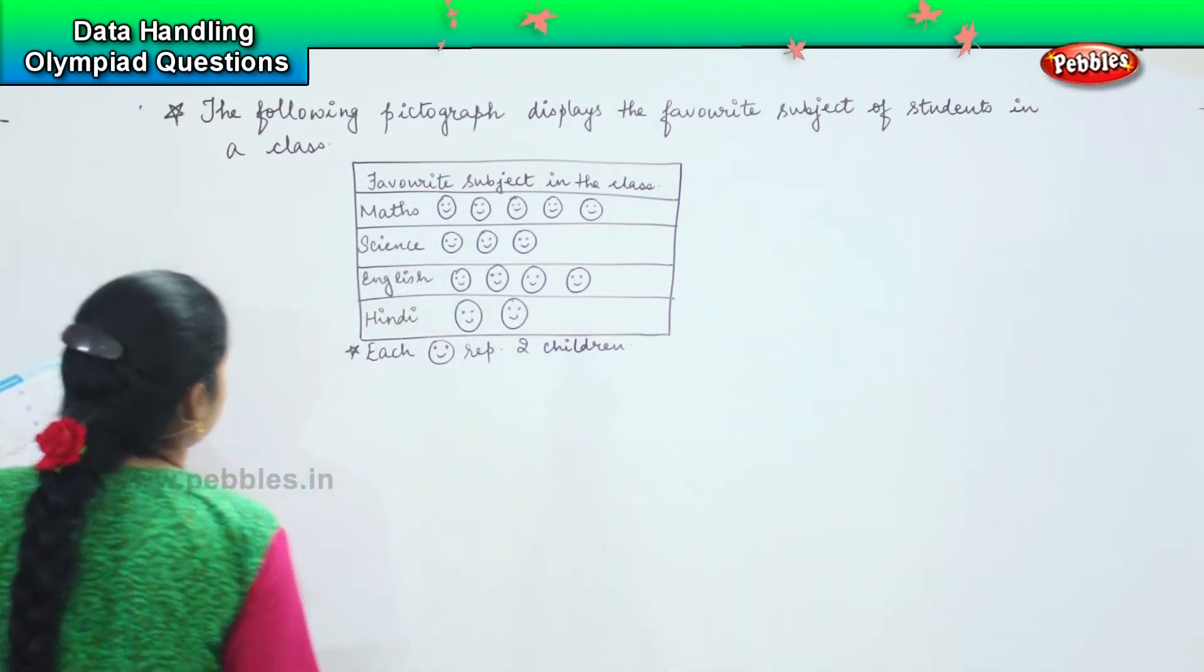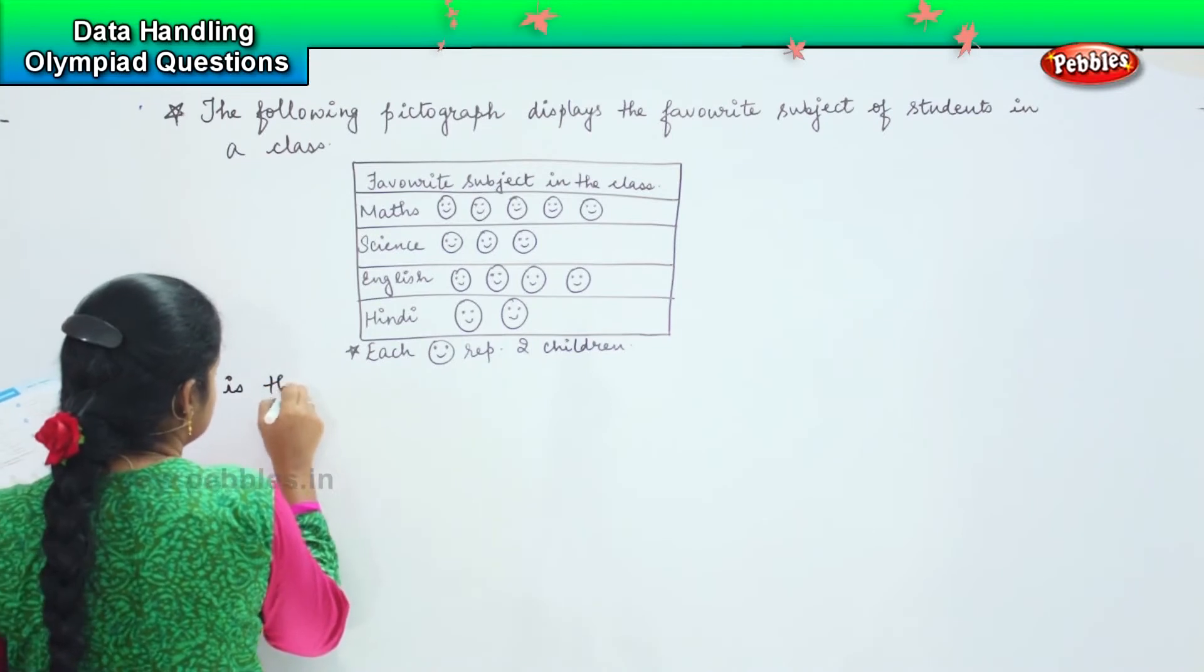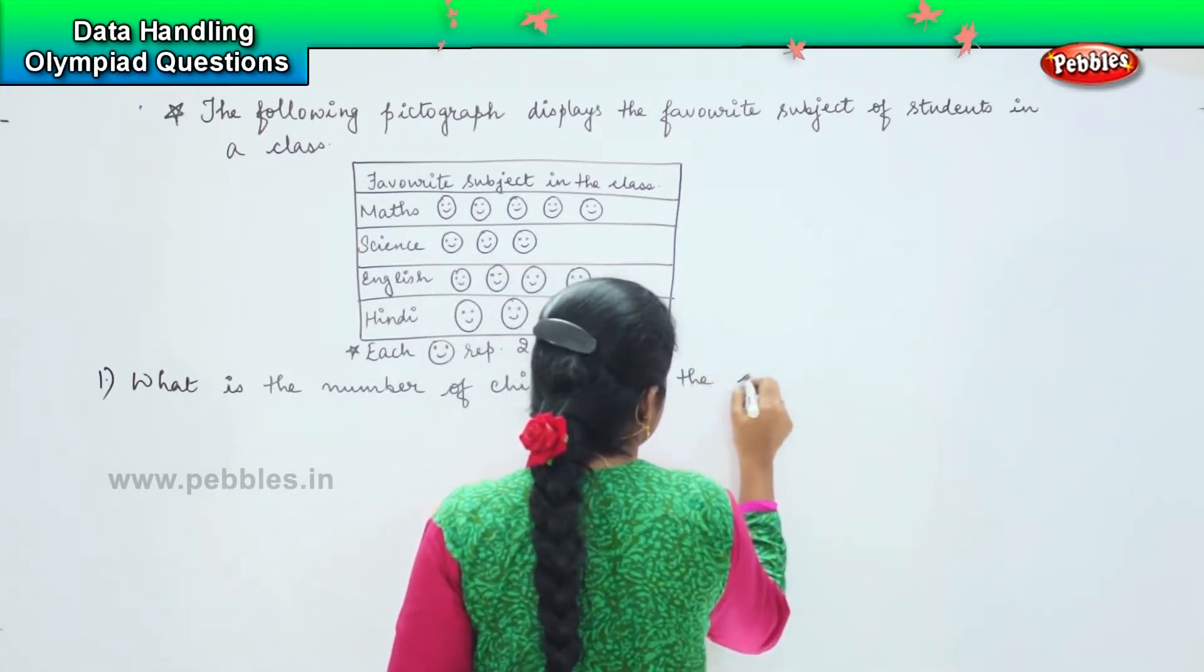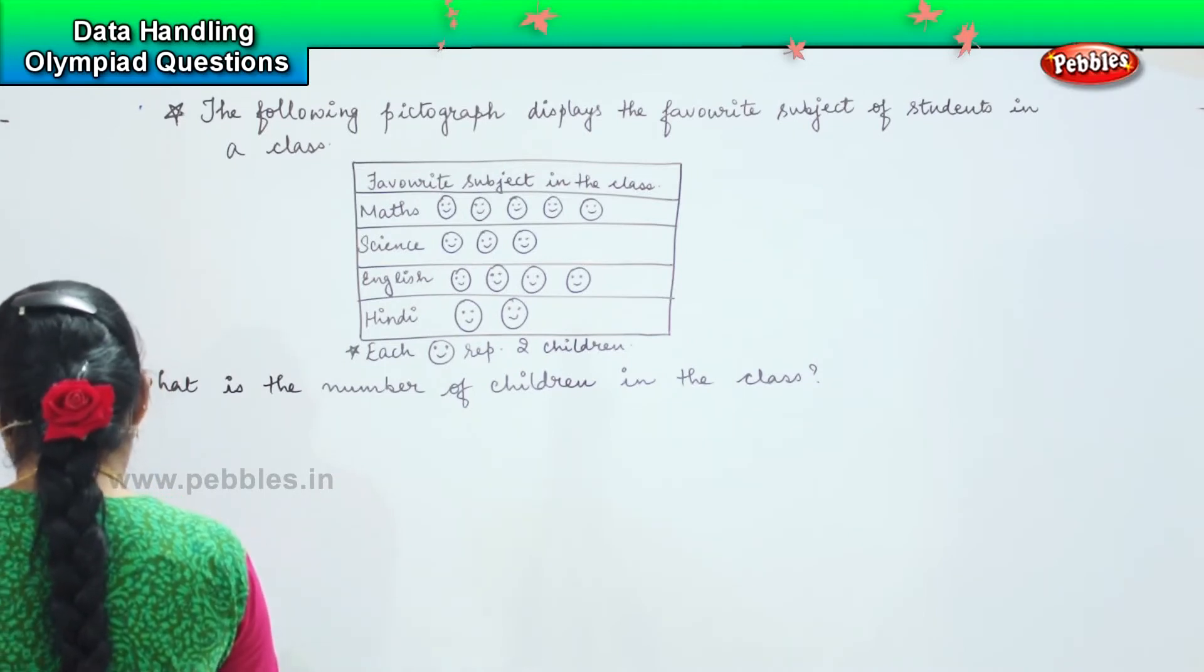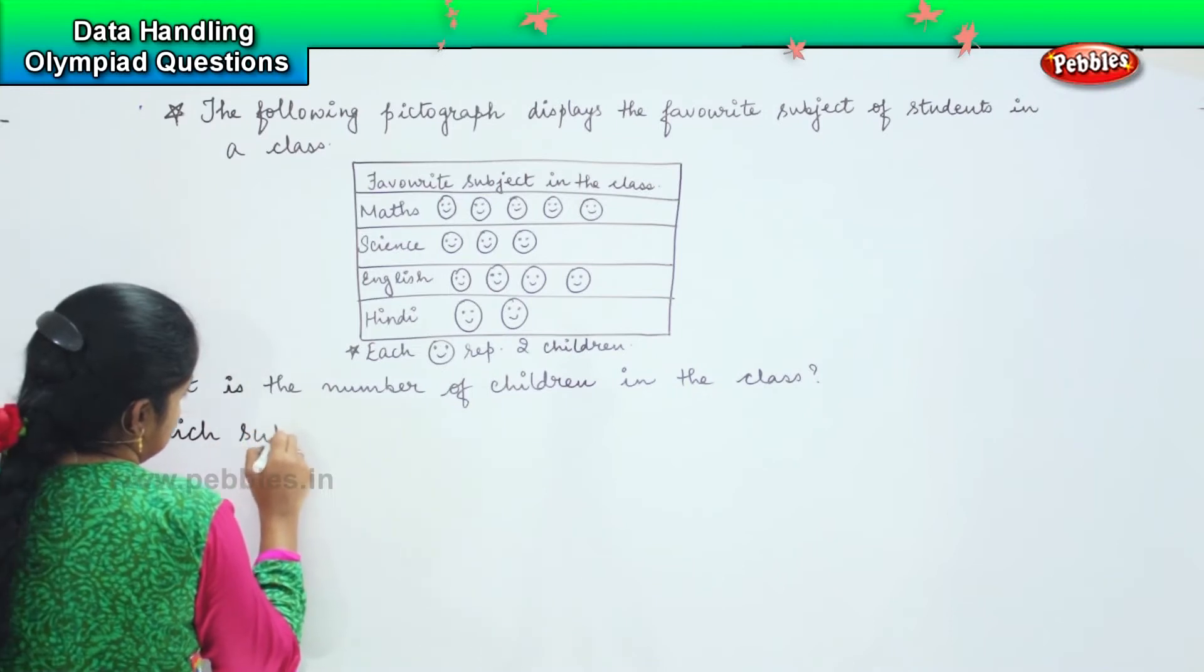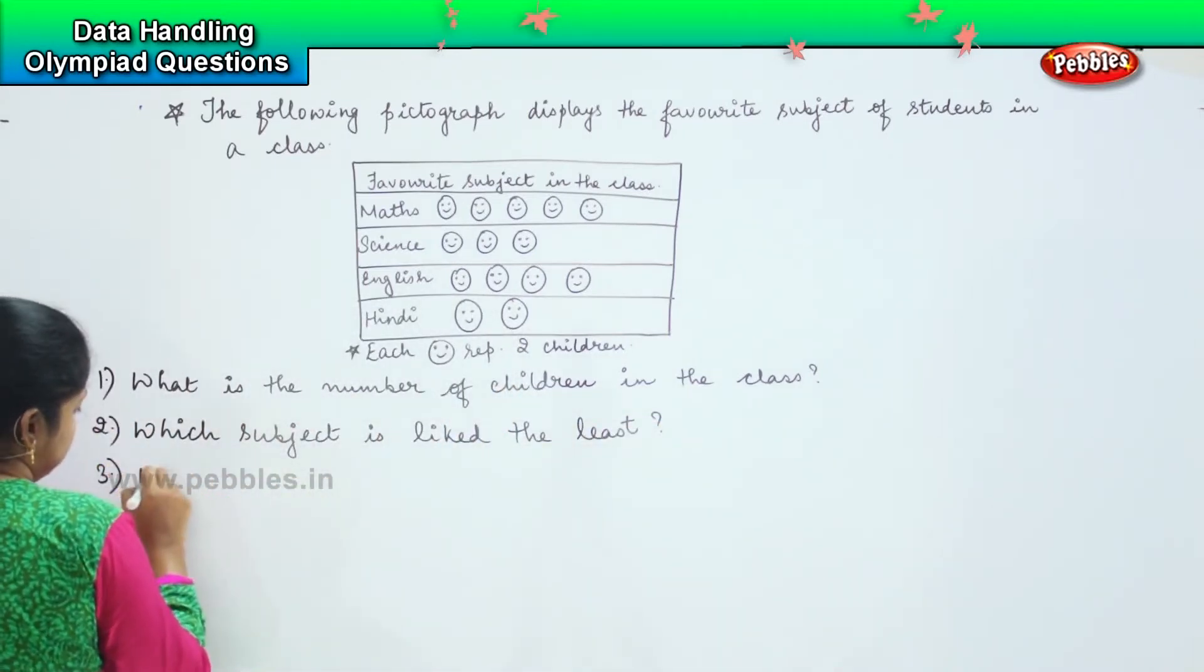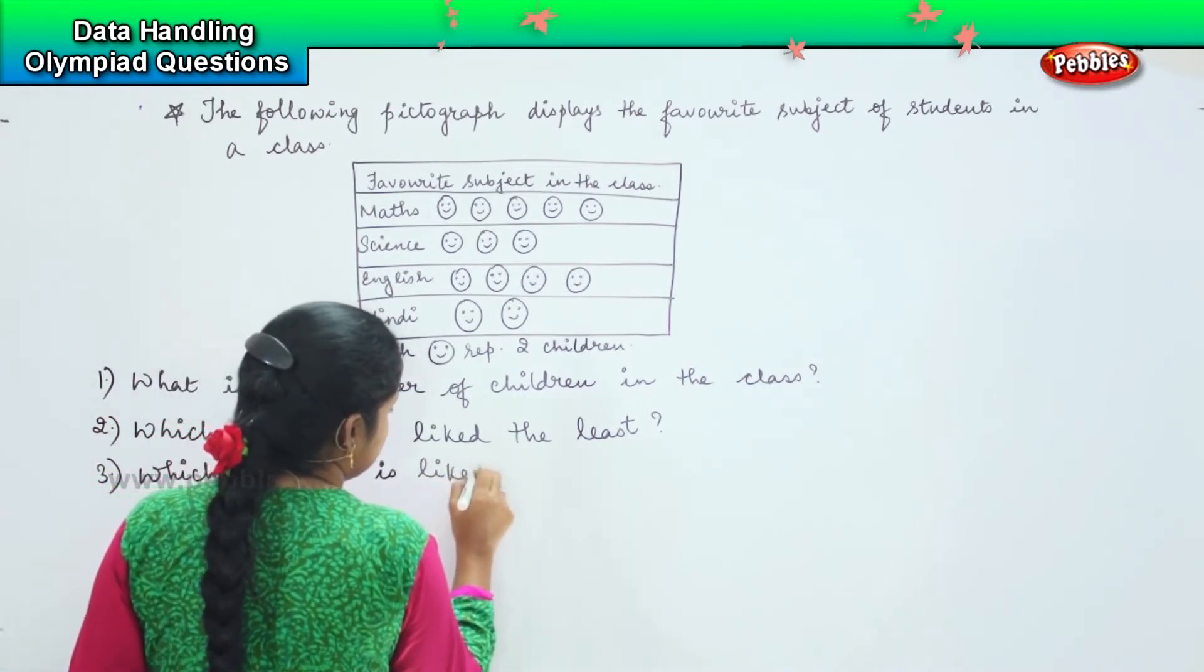So now the questions asked are: What is the number of children in the class? The next question is which subject is liked the least? Next one, which subject is liked the most?